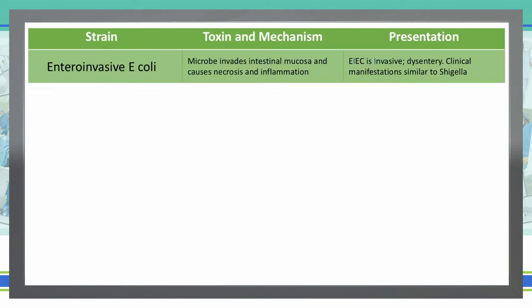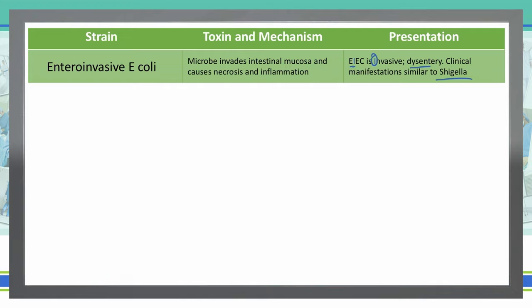Entero-invasive E. coli, or EIEC, is where the microbe invades the intestinal mucosa, causing necrosis and inflammation. Think of the 'I' in EIEC meaning invasive — it's invading that intestinal mucosa, causing dysentery. We often see the same type of symptoms as Shigella; you can refer back to a previous lecture on Shigella clinical manifestations for review.